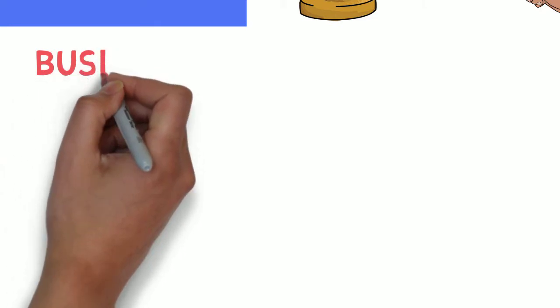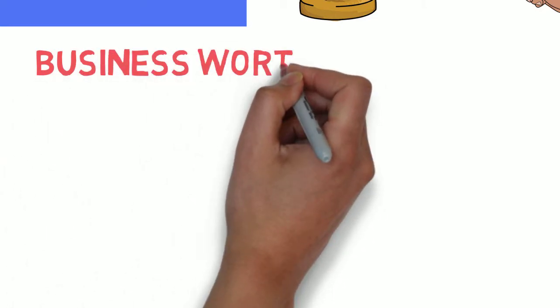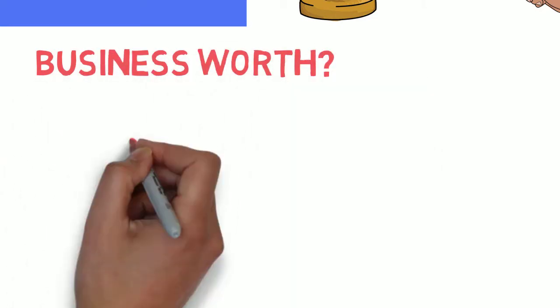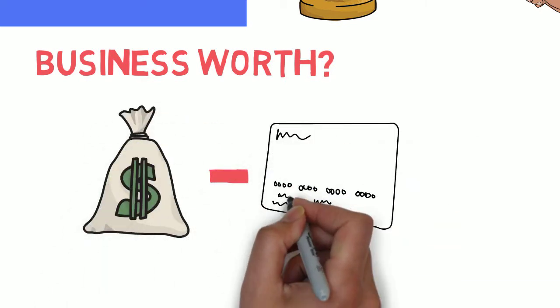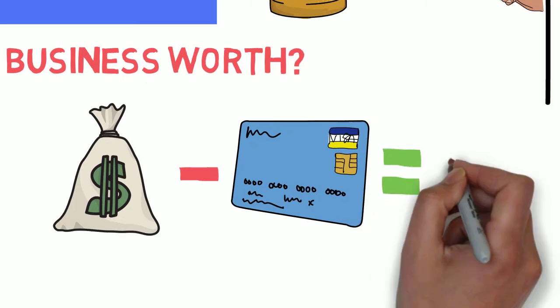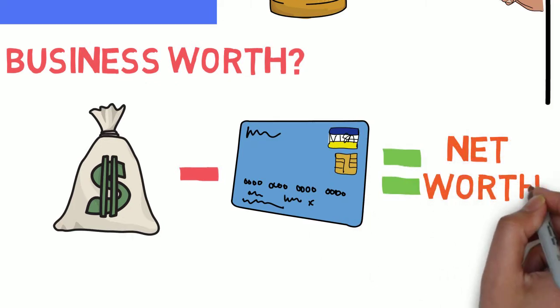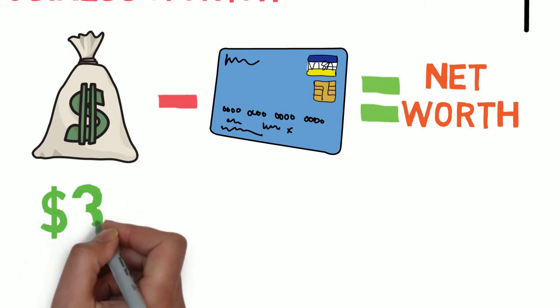The other thing that a balance sheet can do is determine a business's net worth. The way this equation works is assets minus liabilities equals the business's net worth. So what that can show you is basically a snapshot in time of what a business is worth.